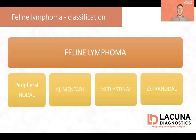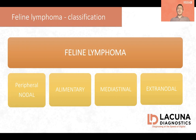From an anatomical point of view, lymphoma can be classified as nodal when there is involvement of one or more lymph nodes, alimentary when there is primary involvement of any part of the GI tract, mediastinal when there is involvement of the thymus or mediastinal lymph nodes, and extranodal when any other organ is involved. In cats, kidneys and nasal areas are considered the most common sites for extranodal lymphoma.